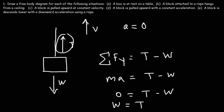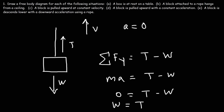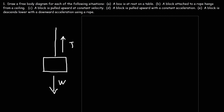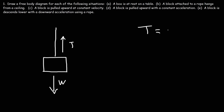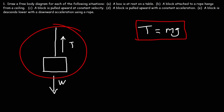Therefore, the tension and weight force are the same. At constant velocity, these two forces cancel out, so the length of the two arrows should be the same. The tension equals the weight force, which equals mg.